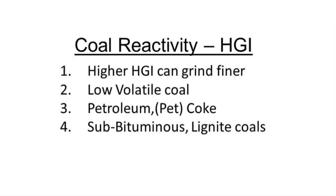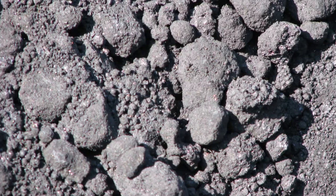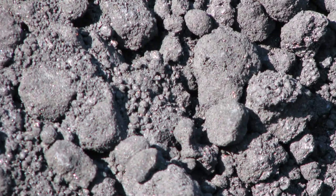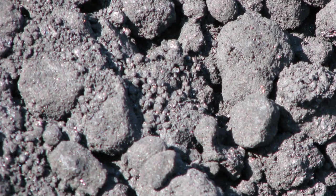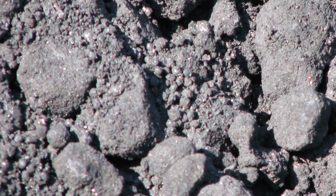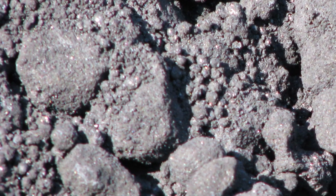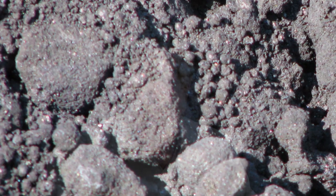Petroleum cokes are always low volatile, and there are two basic types. A sponge coke is a little more crunchy, can grind up, and might have a Hard Grove Grindability in the 40s or 50s. Then there's shot coke, which consists of little or big round balls and may grind only in the 30s. So even though sponge and shot coke may have similar volatile matter characteristics, it's harder to use shot coke because the HGI is tougher — making it harder to grind to the small particles that a low volatile material would need.